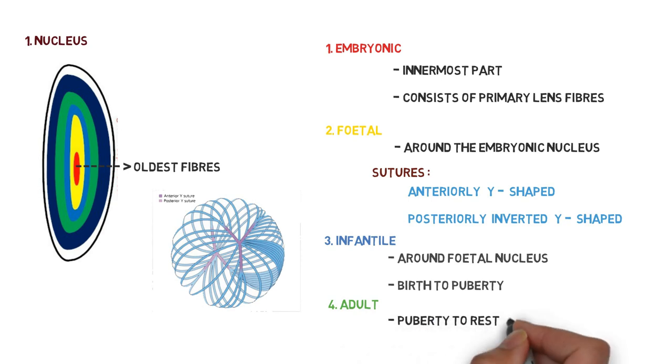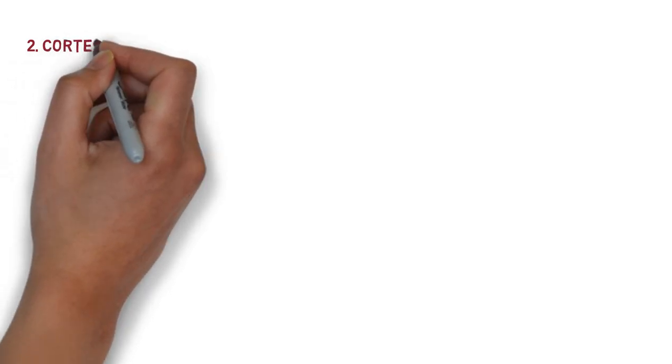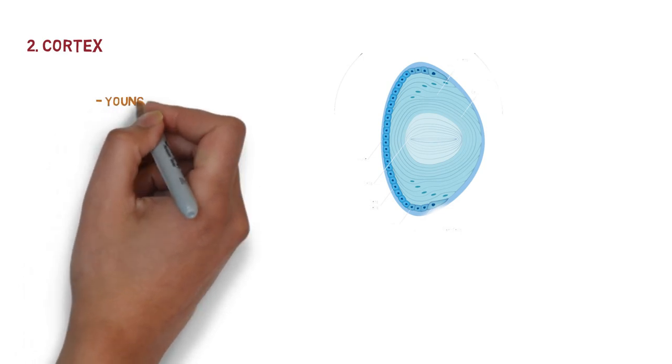The second one is cortex. Cortex is present at the peripheral part of the nucleus and it consists of youngest lens fibers.